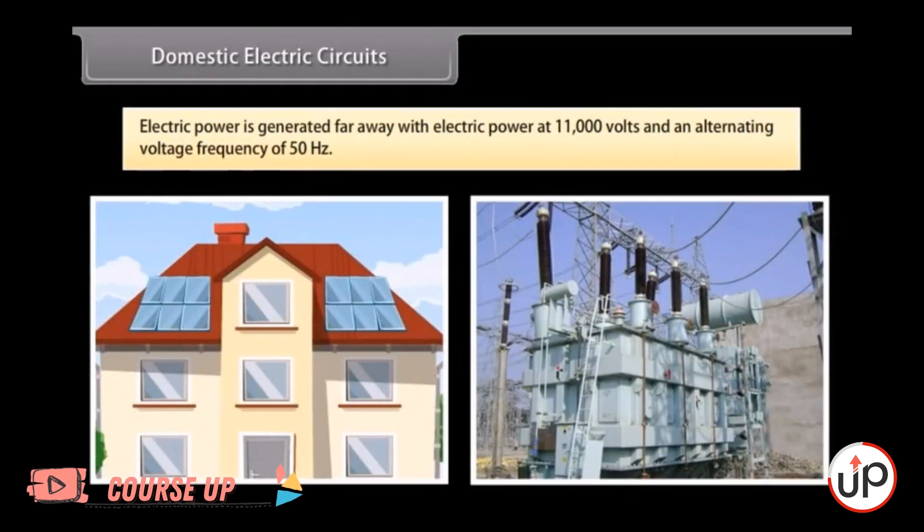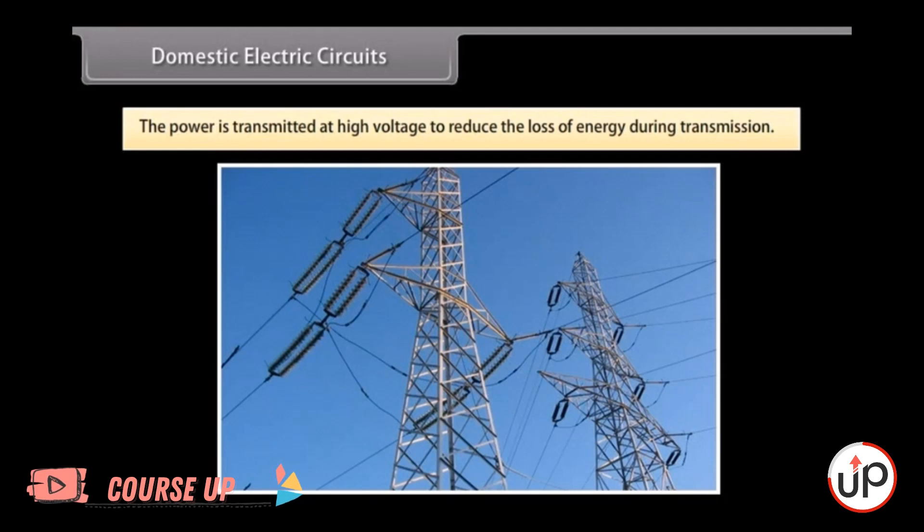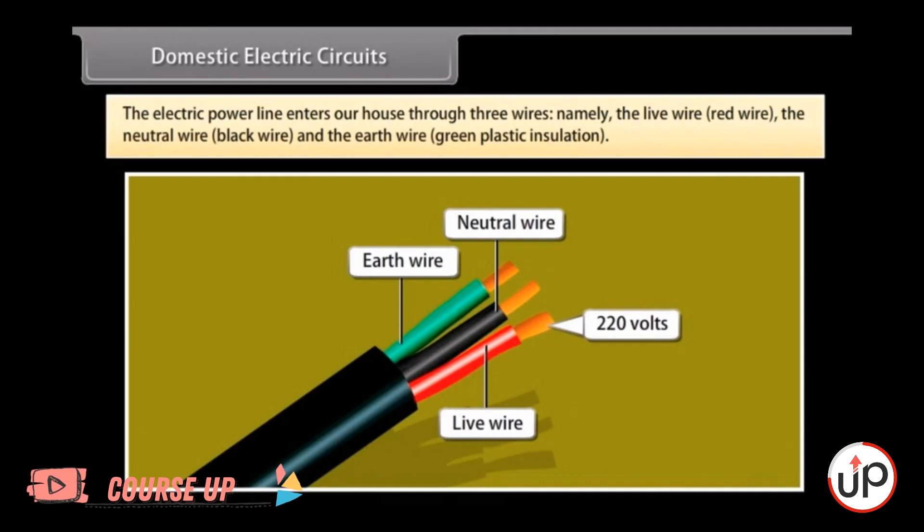Domestic electrical circuits. Electric power is generated far away from the places it is consumed. At the generating station, the electric power is generated at 11,000 volts with an alternating voltage frequency of 50 hertz. The power is transmitted to the places of consumption at high voltage to reduce the loss of energy during transmission. The electric power line enters our house through three wires: namely the live wire (red wire), the neutral wire (black wire), and the earth wire (green plastic insulation). The live wire has a high potential of 220 volts and the neutral wire has zero potential. Thus, the potential difference between the live wire and the neutral wire is 220 minus 0 which equals 220 volts.